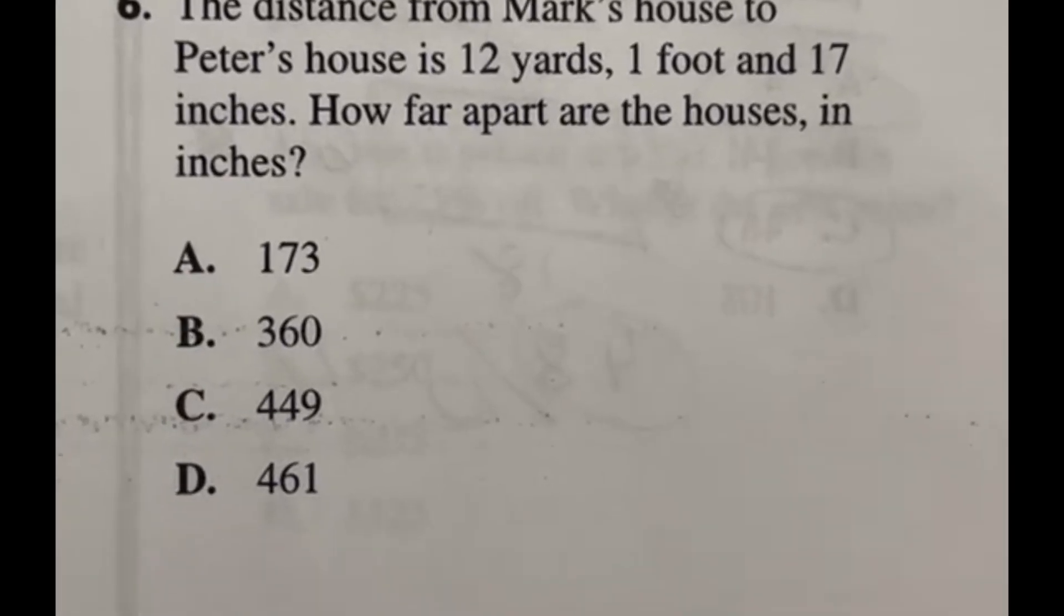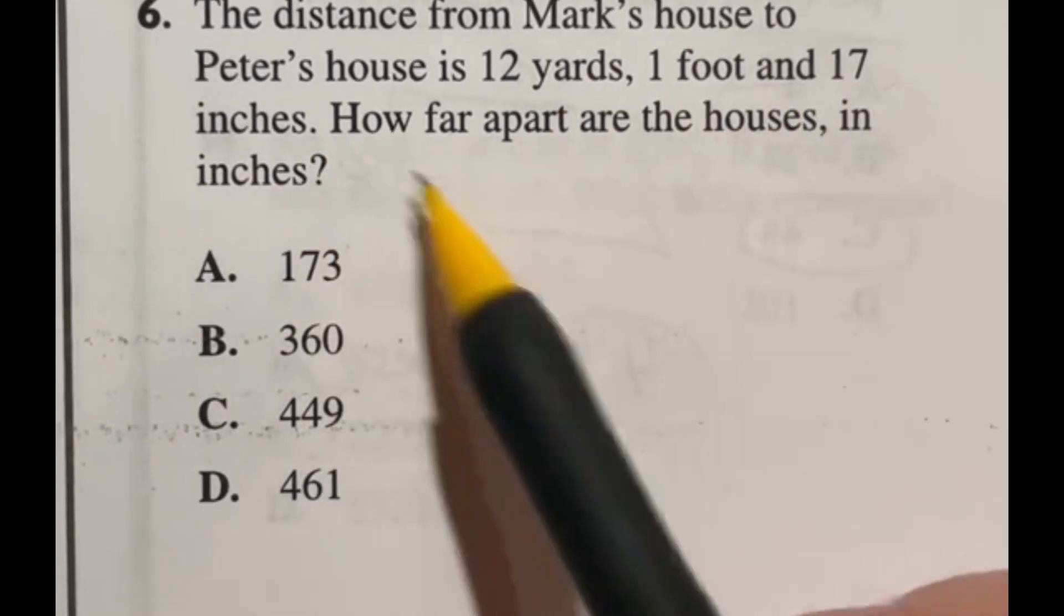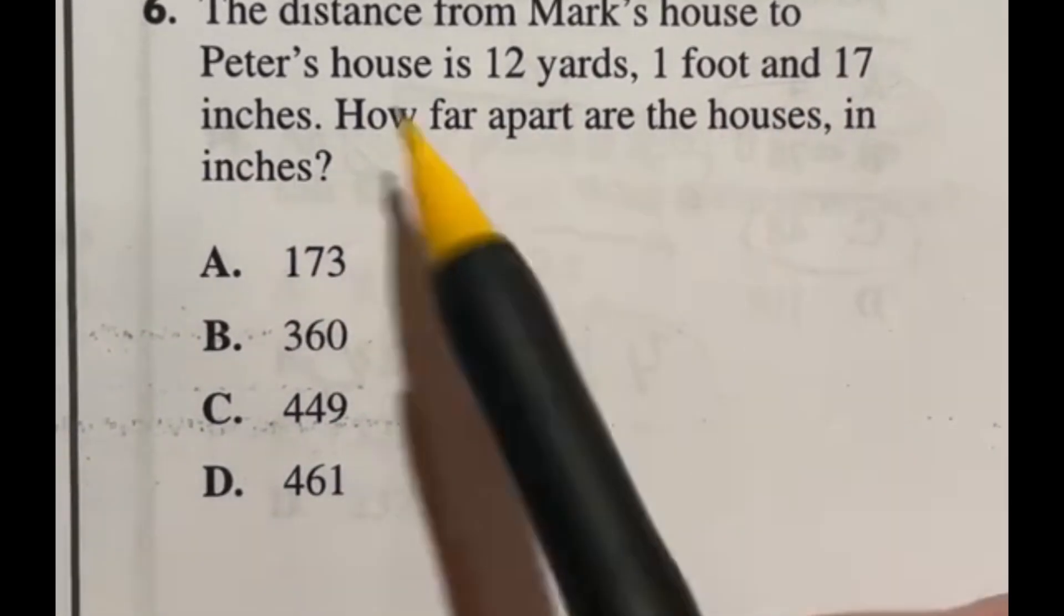Number six says the distance from Mark's house to Peter's house is 12 yards, one foot, and 17 inches. How far apart are the houses in inches?